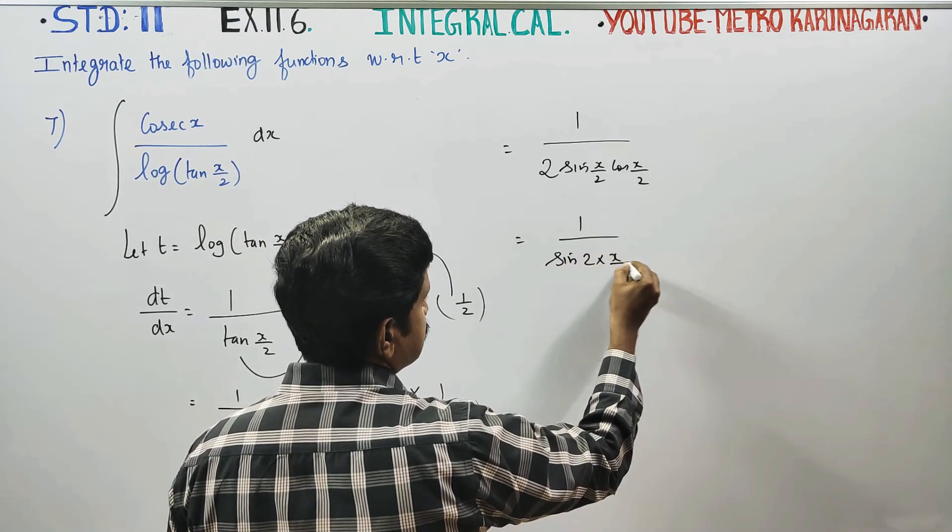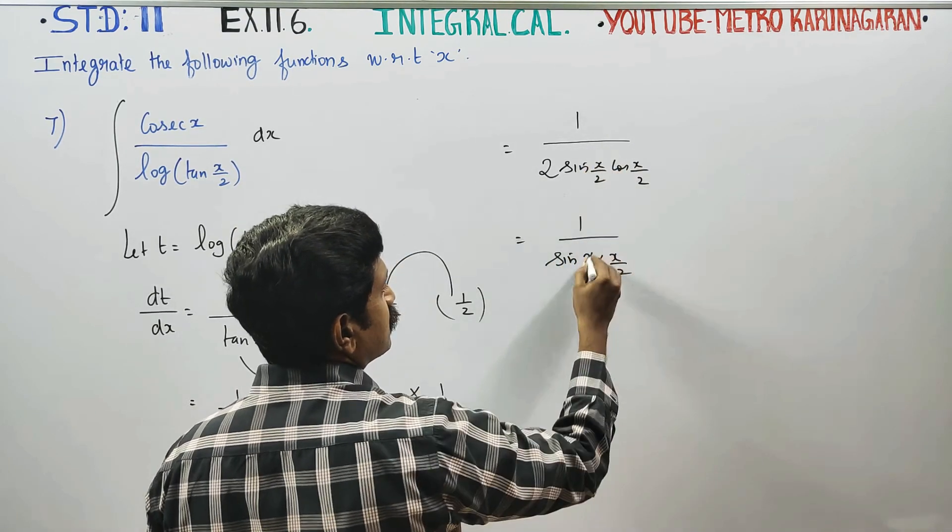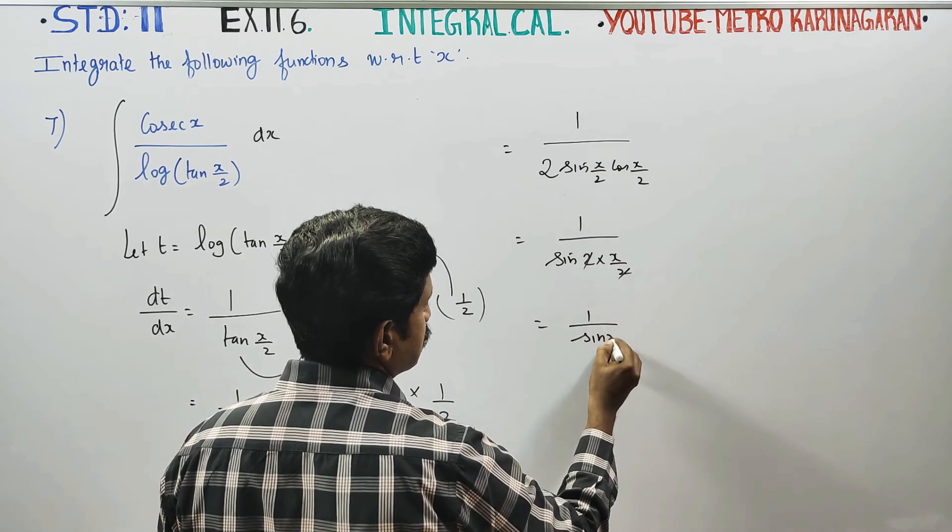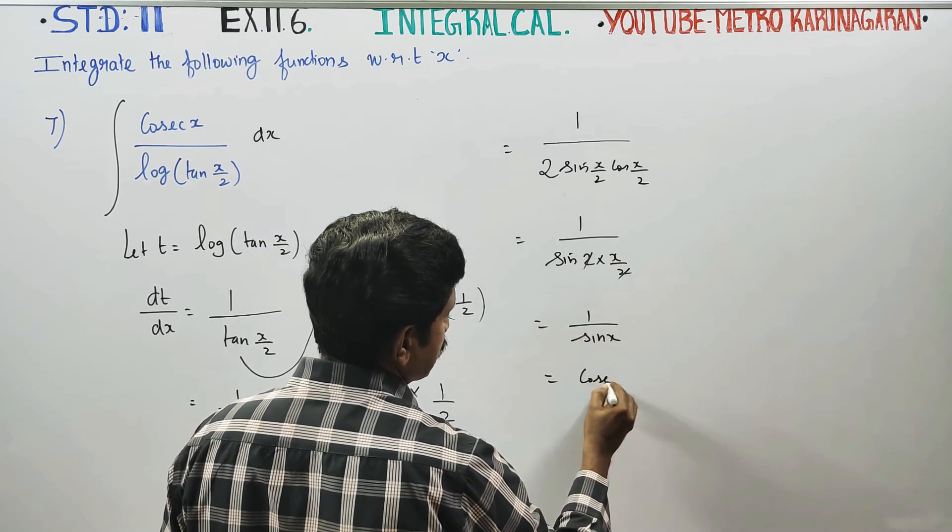Sin 2 times x by 2 is sin x. 2 cancels, giving 1 by sin x. 1 by sin x is cosecant x.